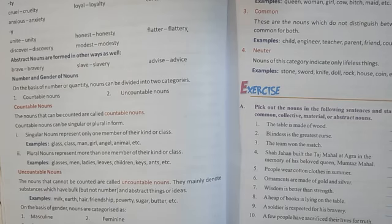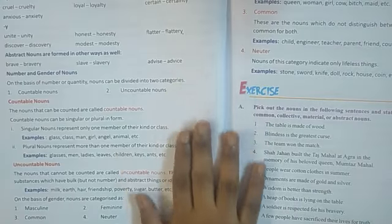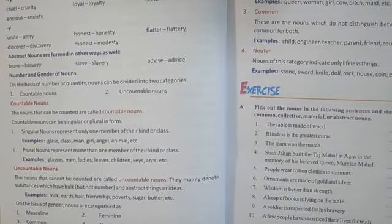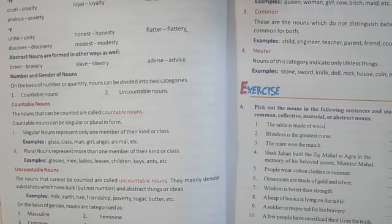For example, can you count water? No. Can you count pencil? Yes. So pencil becomes your countable noun and water becomes your uncountable noun. The nouns that can be counted are called countable nouns. Countable nouns can be plural and singular in form.